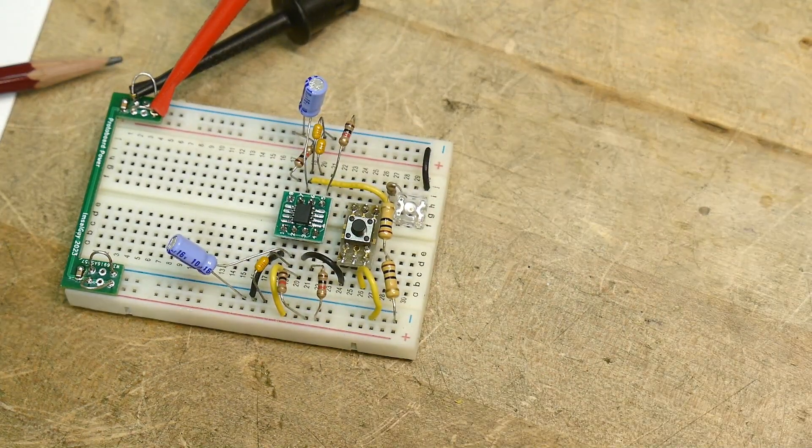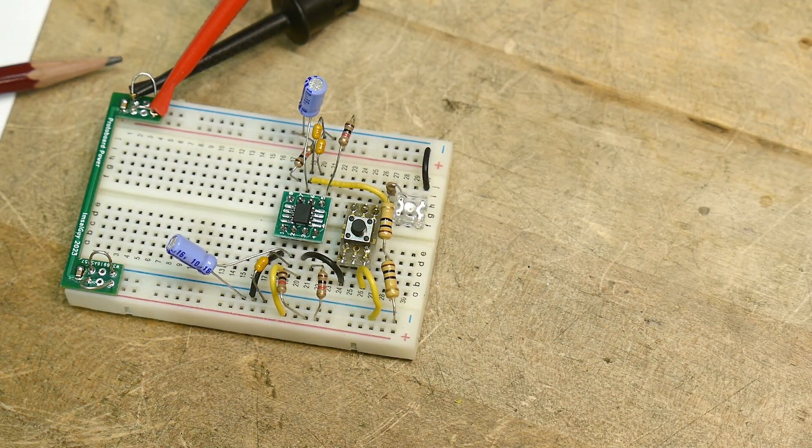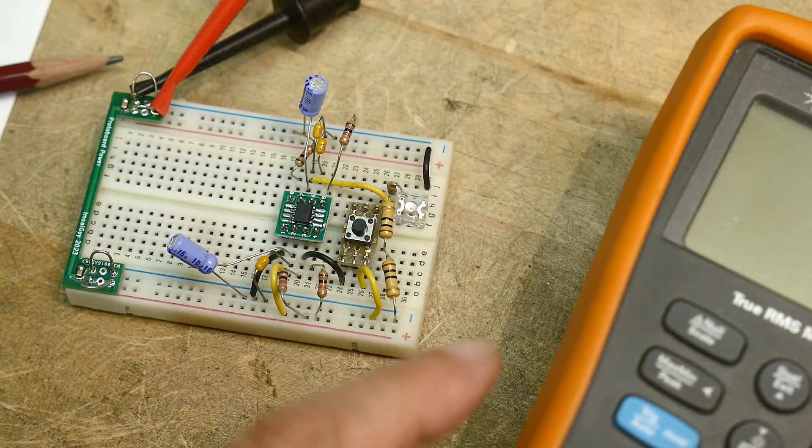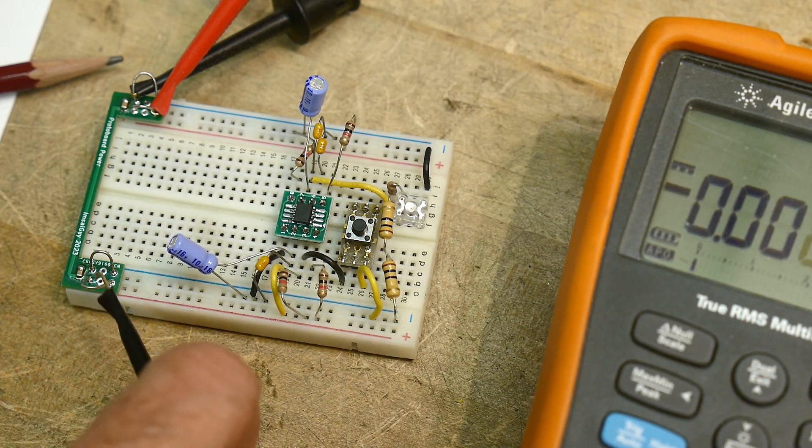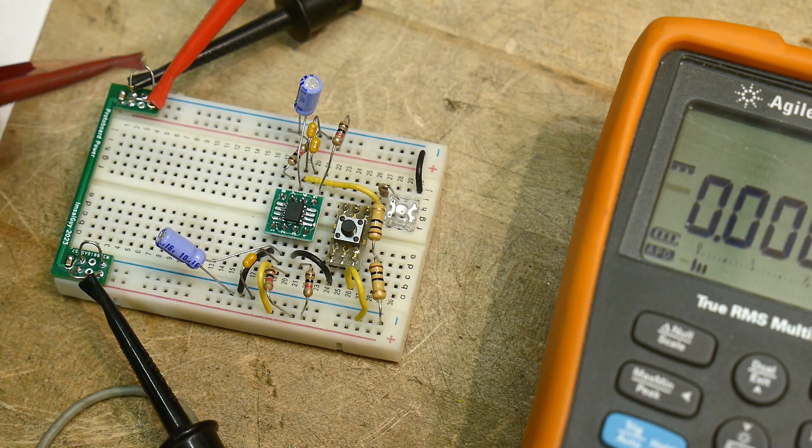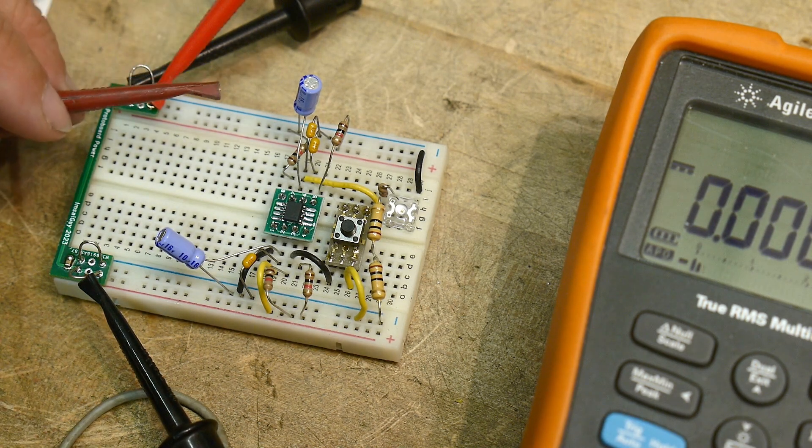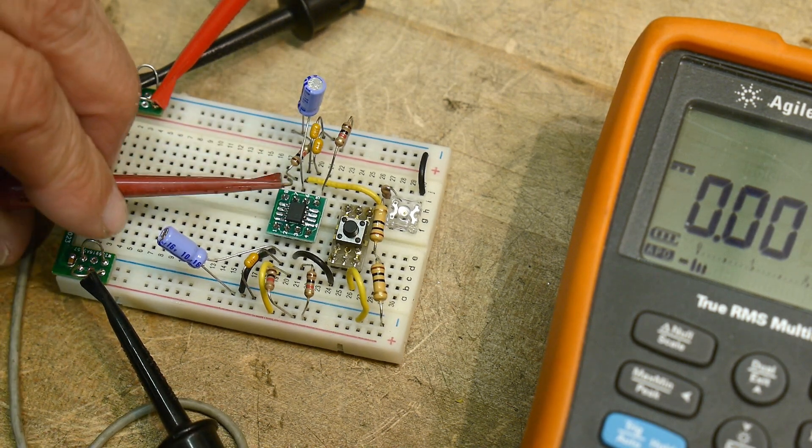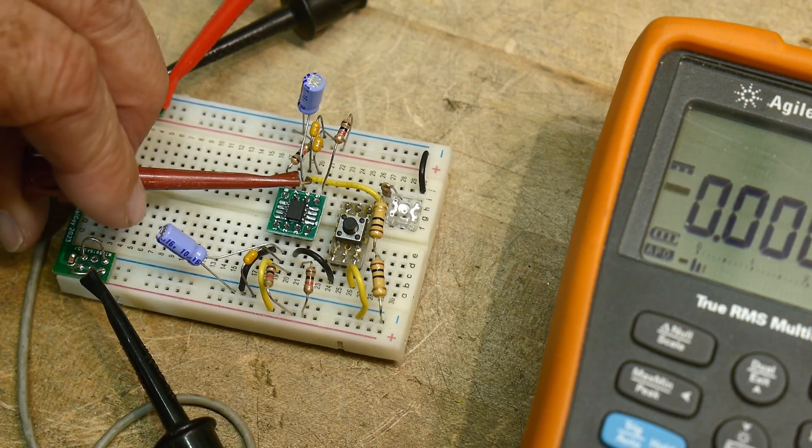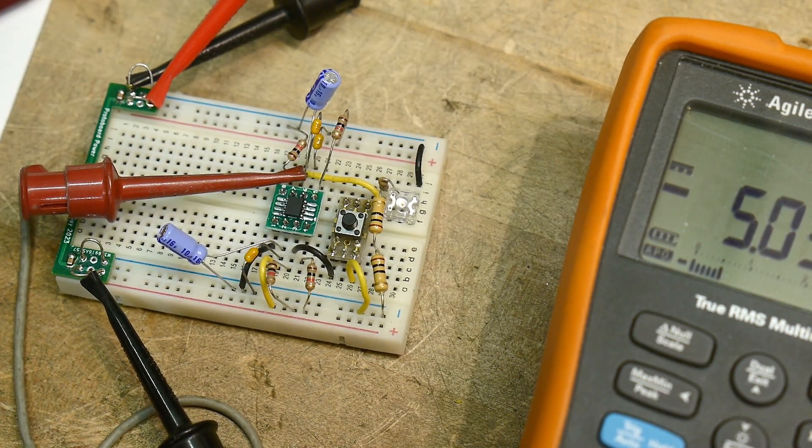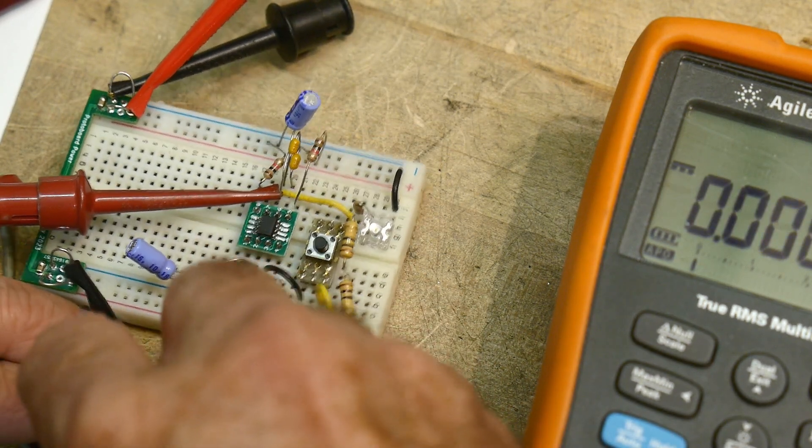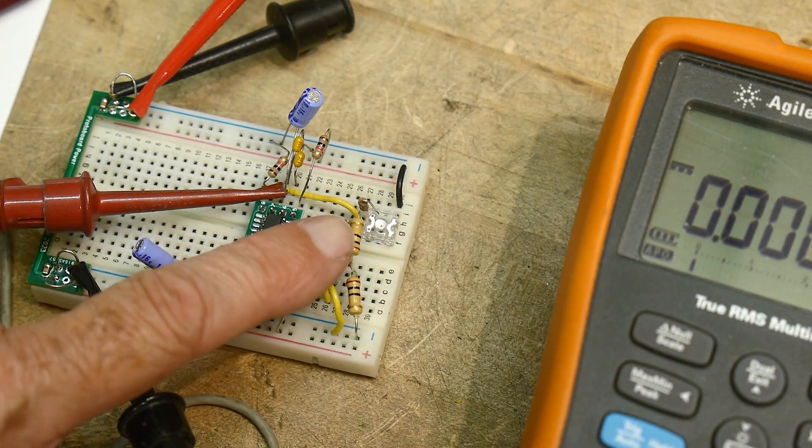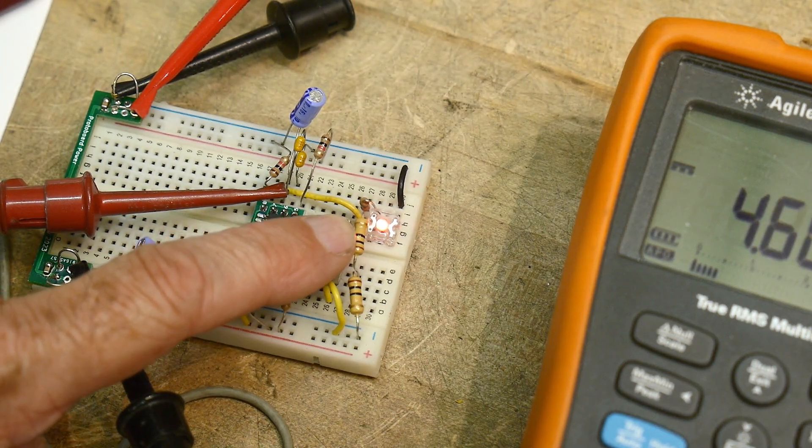Now I want to make some measurements here because I found something a bit odd about this part. So let's go here. We'll measure ground. We'll measure the output. Let's see. The output is over here. Go onto that one there. And oops, do I have the - yeah, I have the ground there. Okay.